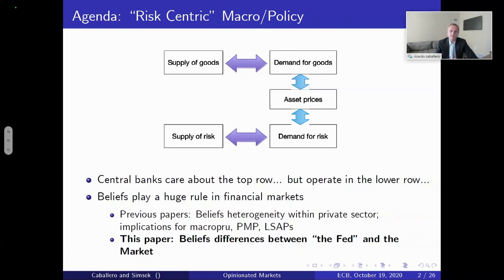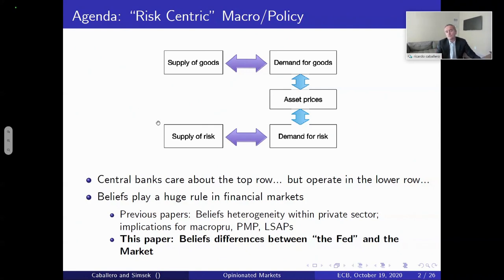The basic idea is very simple. In macroeconomics, there is a productive capacity that can produce a certain amount of goods — the supply of goods, the potential supply. Most macro models and macroeconomic policy address an absorption problem: how to find the right demand for that amount of supply. A productive capacity also produces risks embedded in the assets in the economy, so there's also a supply of risk, and therefore a second absorption problem: finding the right demand for all the risk produced by the productive capacity.